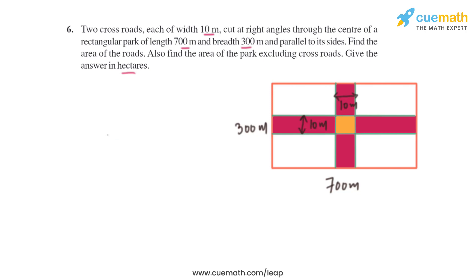The area is counted twice, so let's find the area of the road: area of horizontal road plus area of vertical road minus the area of the yellow portion. When we consider the horizontal road, the area will be 10 × 700. When we consider the vertical road, the area is 10 × 300.